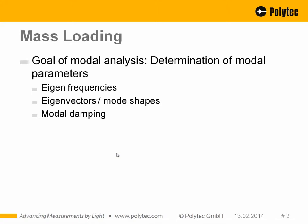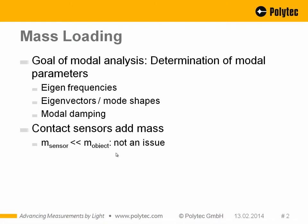If we want to measure vibration — for example in an experimental modal analysis — we want to determine modal parameters like eigenfrequencies, eigenvectors, mode shapes, or modal damping, which is very important and difficult to estimate with finite element simulation. If we use contact transducers, we always add mass. If the sensor mass is much smaller than the object mass, added mass is not an issue — for example, with a big diesel engine, you won't feel the sensor's influence.